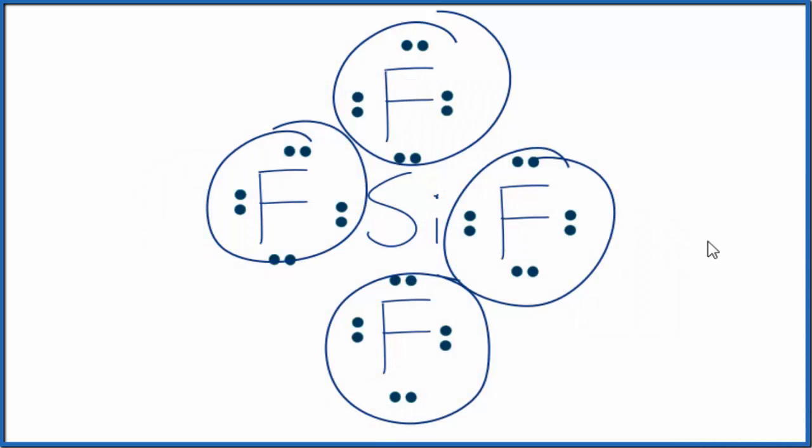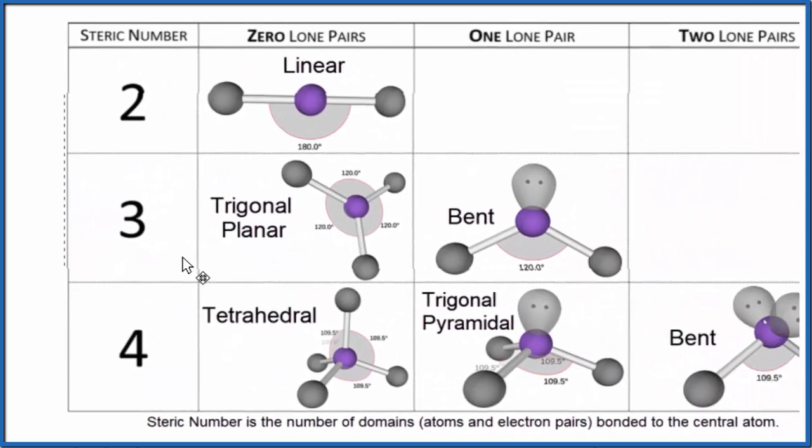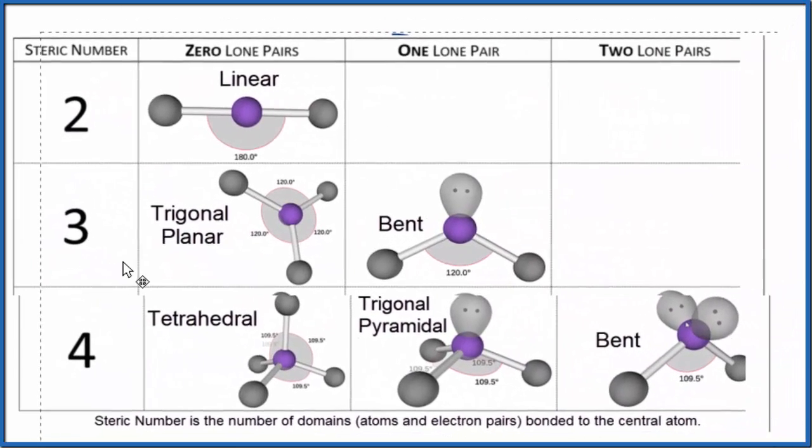Another way we could look at the molecular geometry is we could look at the steric groups, the number of things bonded to the central Si atom. On this table here, we'll see we have four things, a steric number of four.